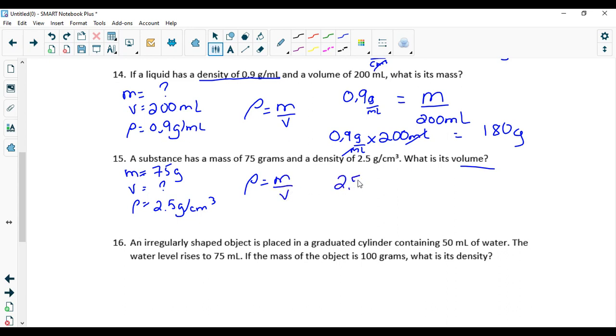2.5 grams per centimeter cube equals 75 grams over volume. Now these two interchange. I'm gonna have v equals 75 grams over 2.5 grams per centimeter cube. The grams cancel. My answer is 30 centimeter cubes.